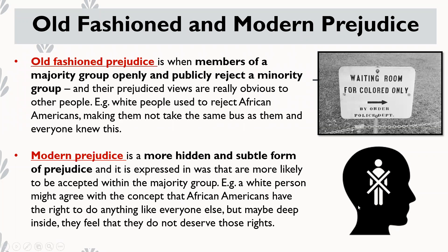With modern prejudice, if people do express their prejudices, they do it in a way that's more likely to be accepted in wider society. For example, on the outside a white person might say 'I believe African-Americans have the right to do everything like everyone else,' but inside they might think their nephew deserves the job more than a 40-year-old African-American candidate. They say what they say to be accepted in society, because they know they'll be outcasted if they say otherwise. That's the difference between old-fashioned and modern prejudice.